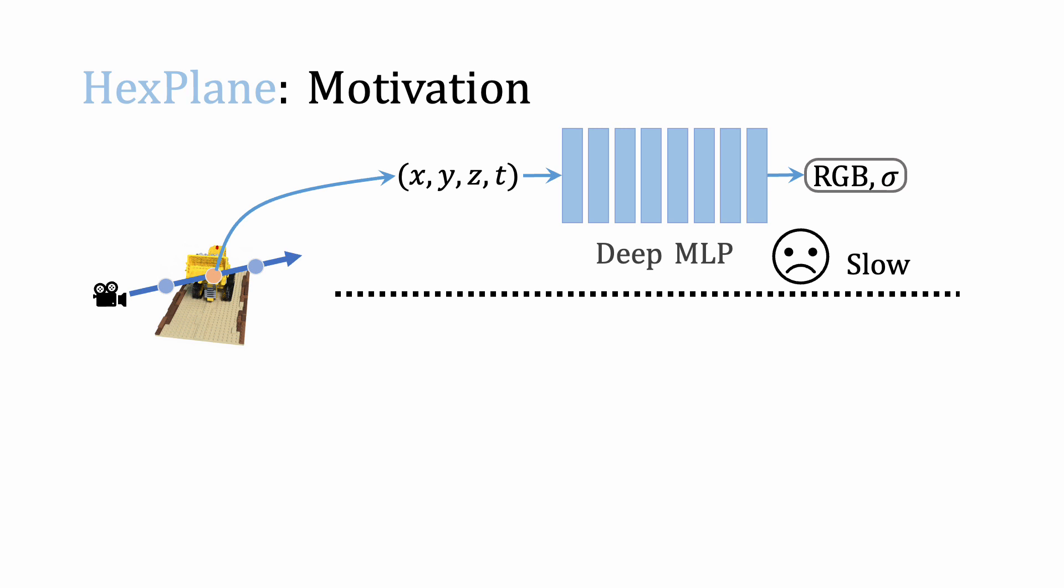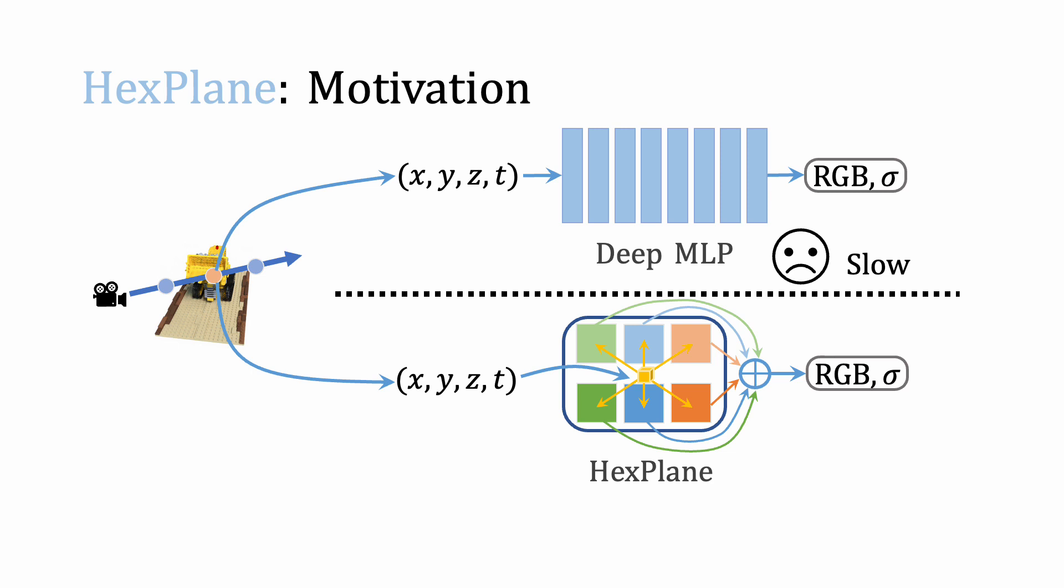In this paper, we propose to explicitly represent a 4D grid by six feature planes and calculate spacetime points features via interpolation and fusion operations. Without the need of deep MLPs, this design is highly effective and efficient.